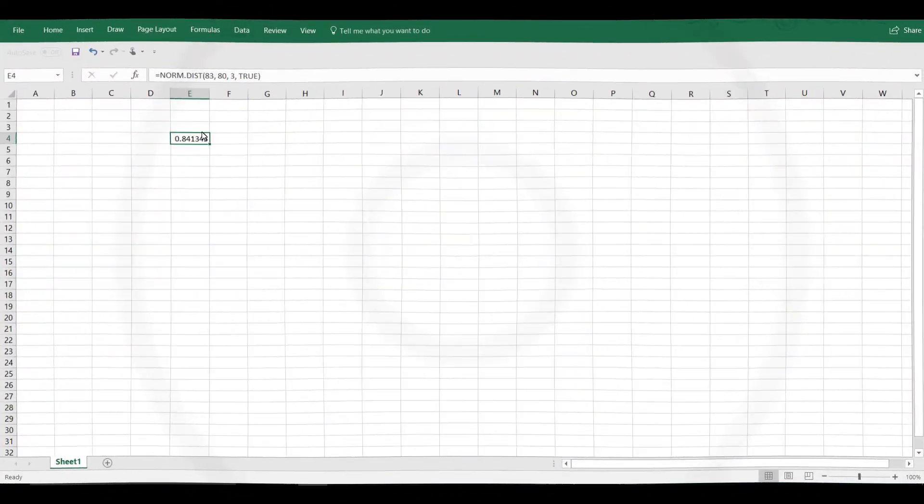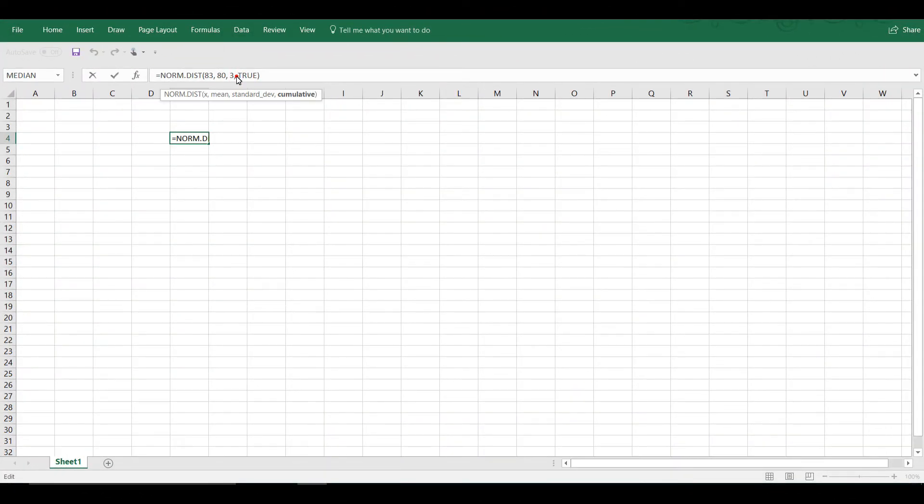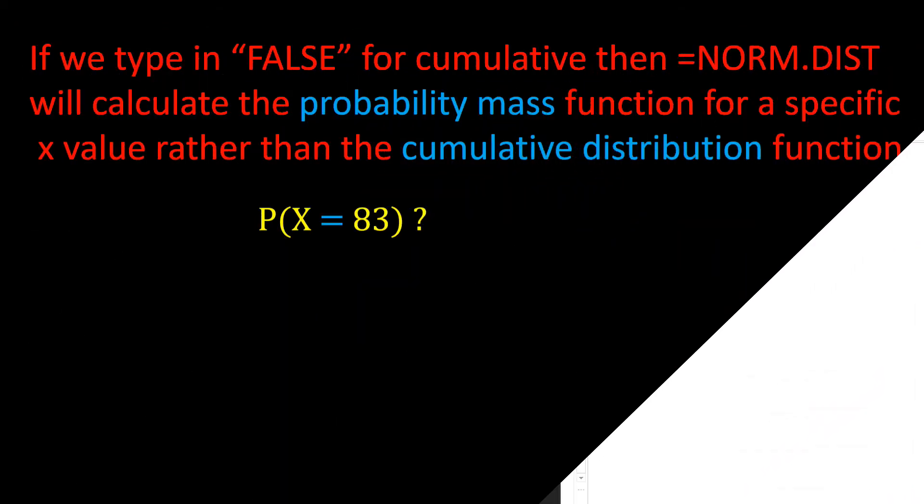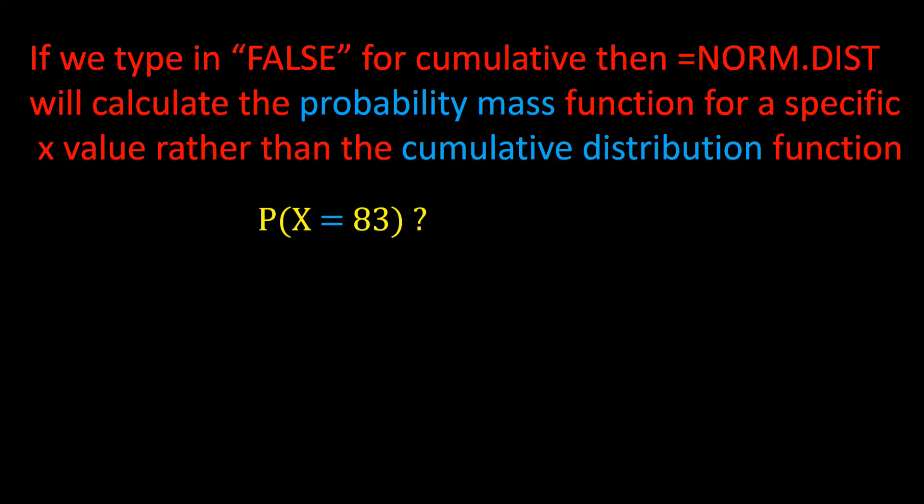Let's go back to Excel and instead of typing in TRUE, let's change TRUE to FALSE. And we have 0.080657. So the probability that x is equal to exactly 83 is 0.080657. So the probability that a student will get exactly 83 is 0.080657.